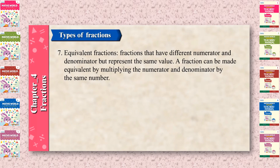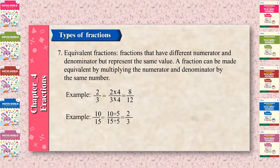Equivalent fractions: fractions that have different numerators and denominators but represent the same value. A fraction can be made equivalent by multiplying the numerator and denominator by the same number. Example: 2 upon 3 is equal to 2 × 4 upon 3 × 4, which is equal to 8 upon 12. Also, 10 upon 15 is equal to 10 ÷ 5 upon 15 ÷ 5, which is equal to 2 upon 3.